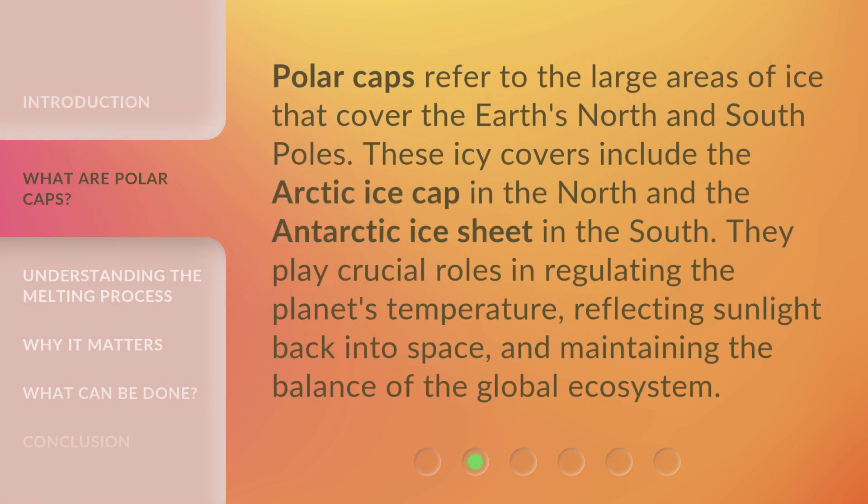Polar Caps refer to the large areas of ice that cover the Earth's North and South Poles. These icy covers include the Arctic Ice Cap in the North and the Antarctic Ice Sheet in the South. They play crucial roles in regulating the planet's temperature, reflecting sunlight back into space, and maintaining the balance of the global ecosystem.